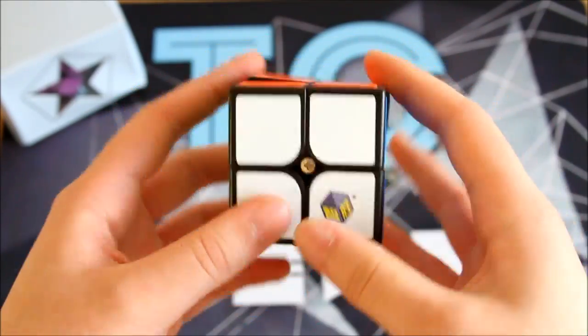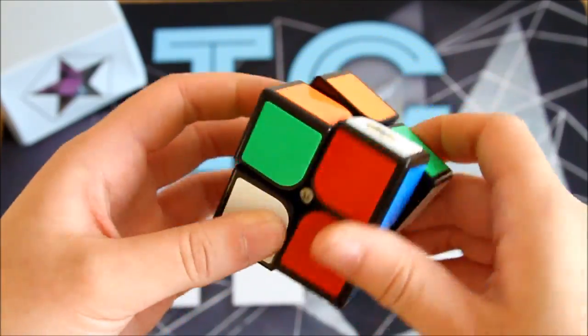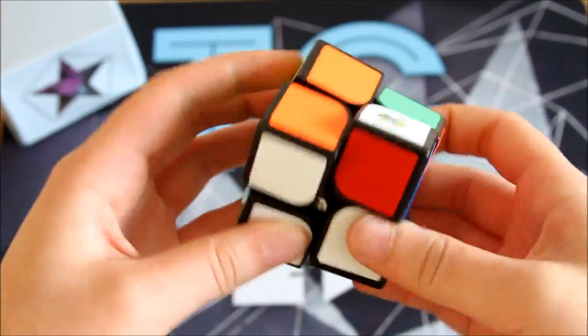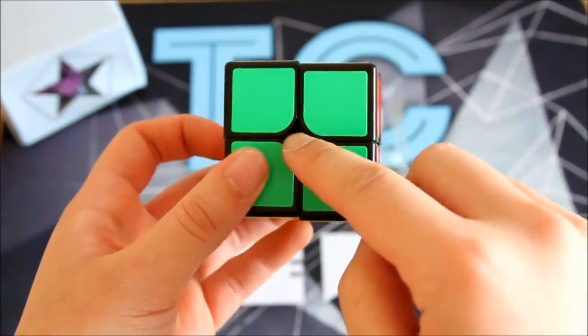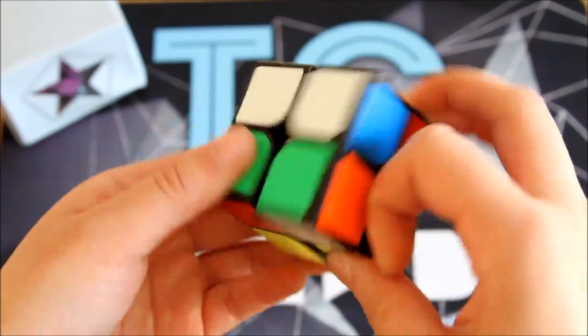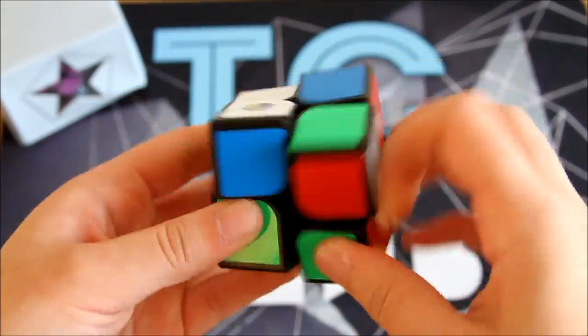If I want to compare this to the Kung Fu 2x2, I wouldn't really know which one I would go for honestly. This one has a totally different feeling. The Kung Fu 2x2 is kind of like a faster Weipo 2, whereas this one is a lighter Dayan 2x2.